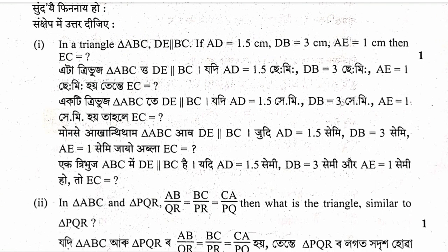In triangle ABC, DE is parallel to BC. If AD equals 1.5 cm, DB equals 3 cm, AE equals 1 cm, then find EC. By Basic Proportionality Theorem, AD by DB equals AE by EC. Substituting: 1.5 by 3 equals 1 by EC, therefore EC equals 2 cm.